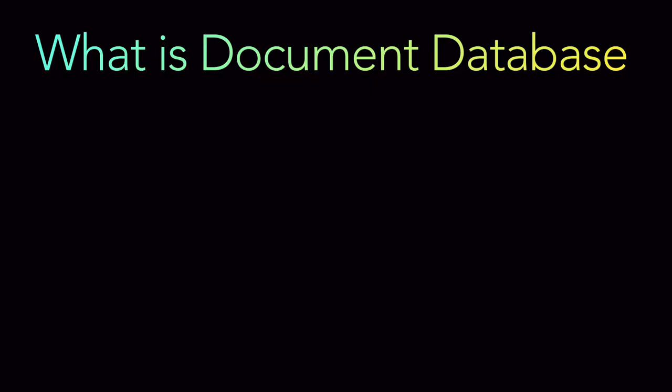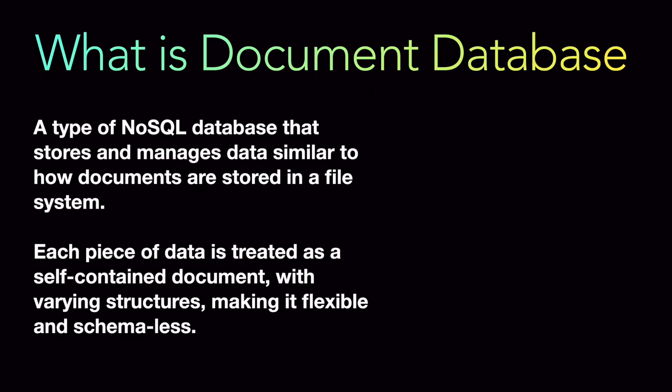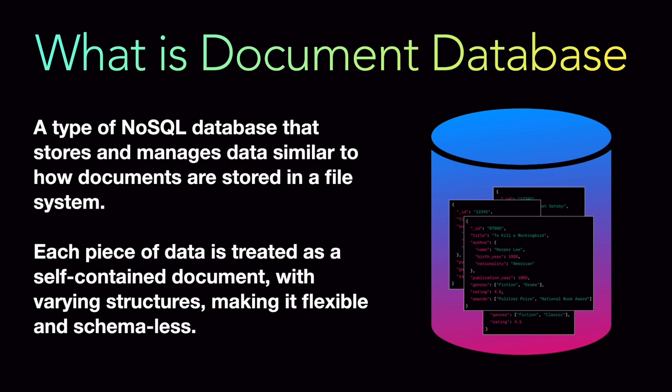What is a document database? A document database is a type of NoSQL database that stores and manages data in a way similar to how documents are stored in the file system, using a format such as JSON or BSON. In a document database, each piece of information is treated as a self-contained document, and these documents can have varying structures, making it flexible and schema-less as a storage solution.